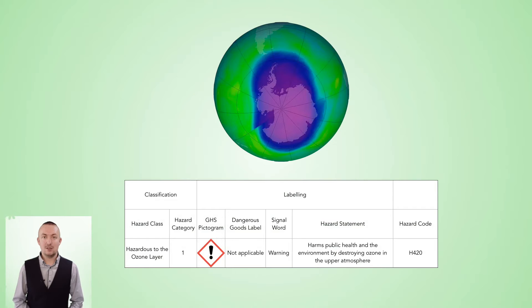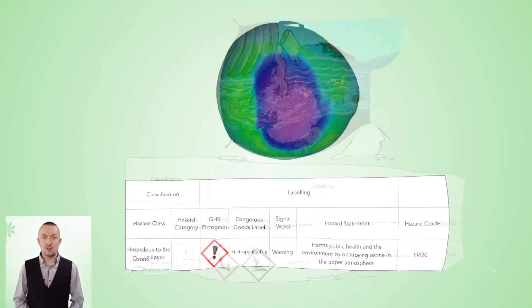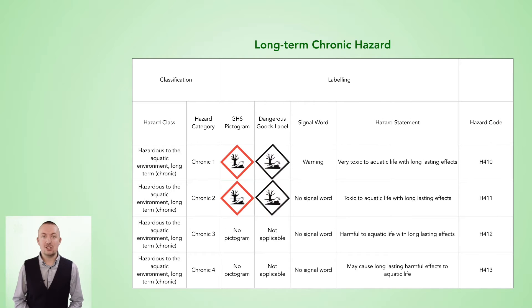There are three types of hazard to the environment which will be included under HP 14. This will be for wastes which are hazardous to the ozone layer, wastes which are hazardous to the aquatic environment with an acute short-term hazard, and wastes which are hazardous to the aquatic environment with a long-term or chronic hazard.